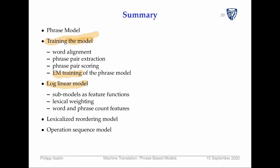We have a bunch of feature functions that combine in a log-linear model, and there are ways to optimize the weights. We talked about the lexicalized reordering model and the operation sequence model as refinements to the generic phrase-based model. This should give you an idea of the mechanism — a bunch of probability tables — but how you actually translate using them is the topic for next lecture.